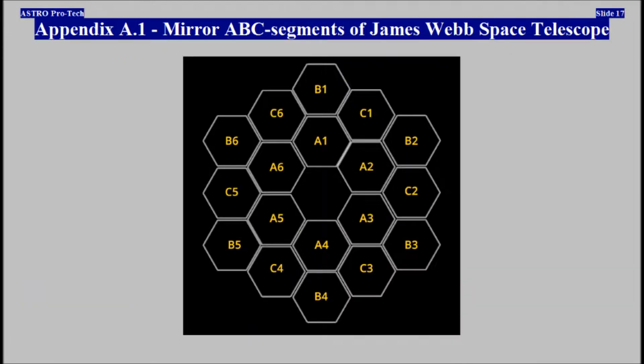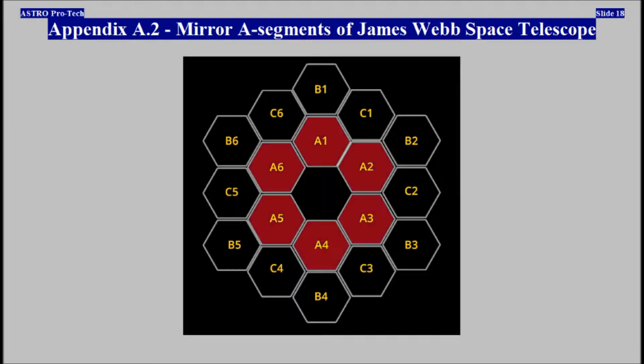Appendix A1: mirror ABC segments of James Webb Space Telescope shown. Appendix A2: mirror ABC segments of James Webb Space Telescope shown.